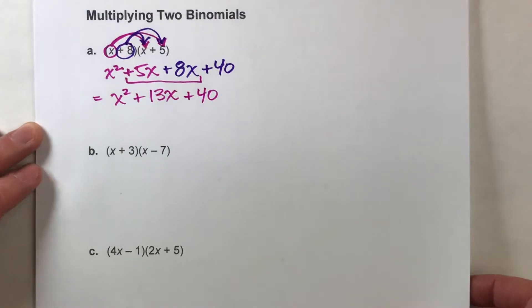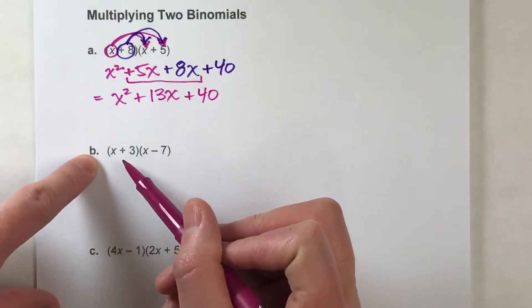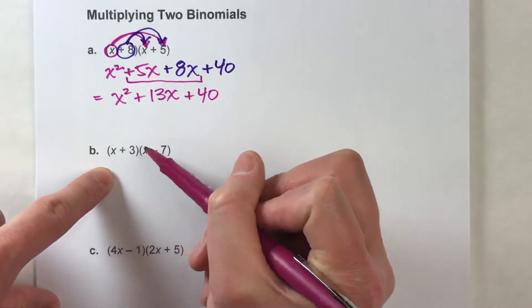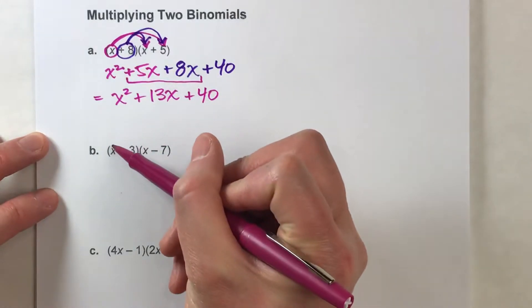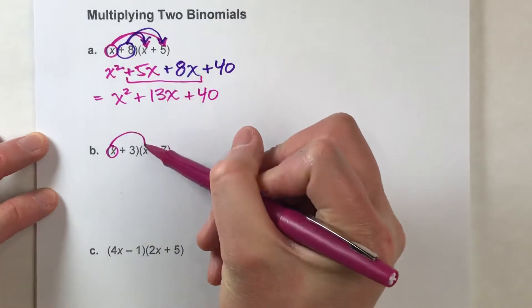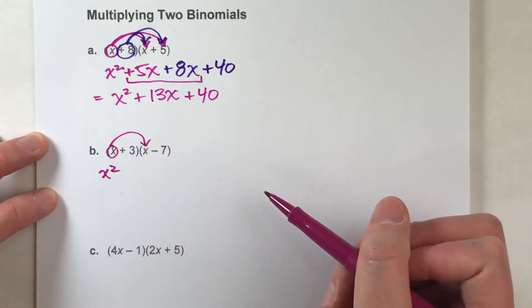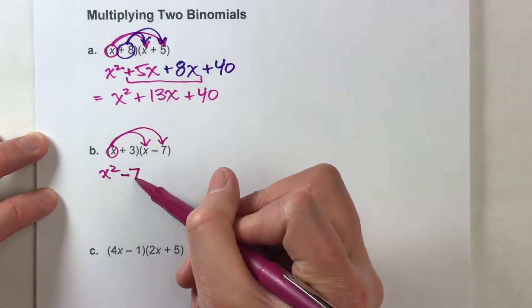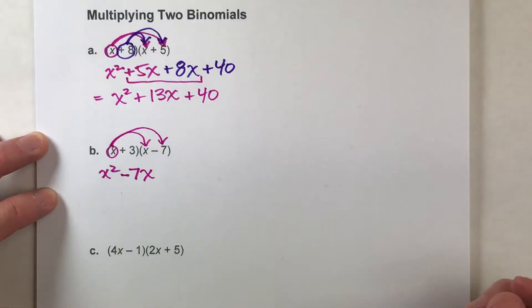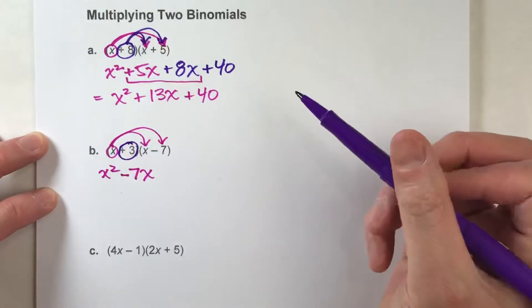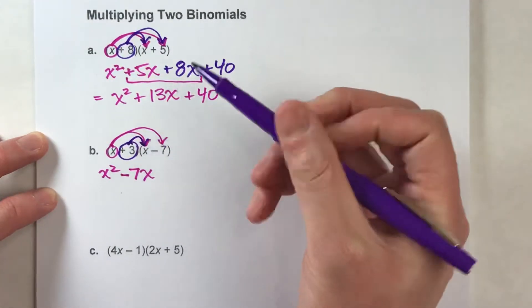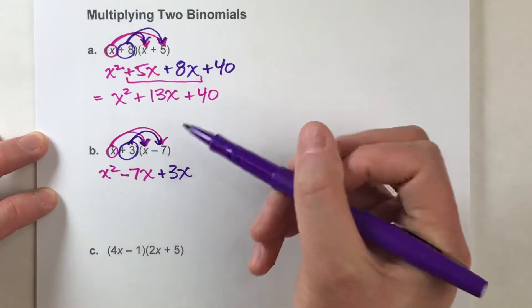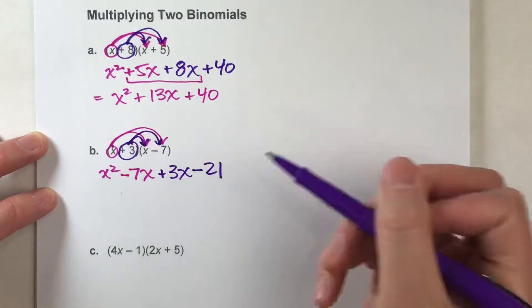Let's do another example so you can see it again. Again, we've got a binomial times a binomial, and we're multiplying everything over here times everything in the other set. So let's start with the first term: x times x, which is x squared. x times negative 7, which is negative 7x. Now let's do the second term. 3 times x, which is positive 3x. 3 times negative 7, which is negative 21.